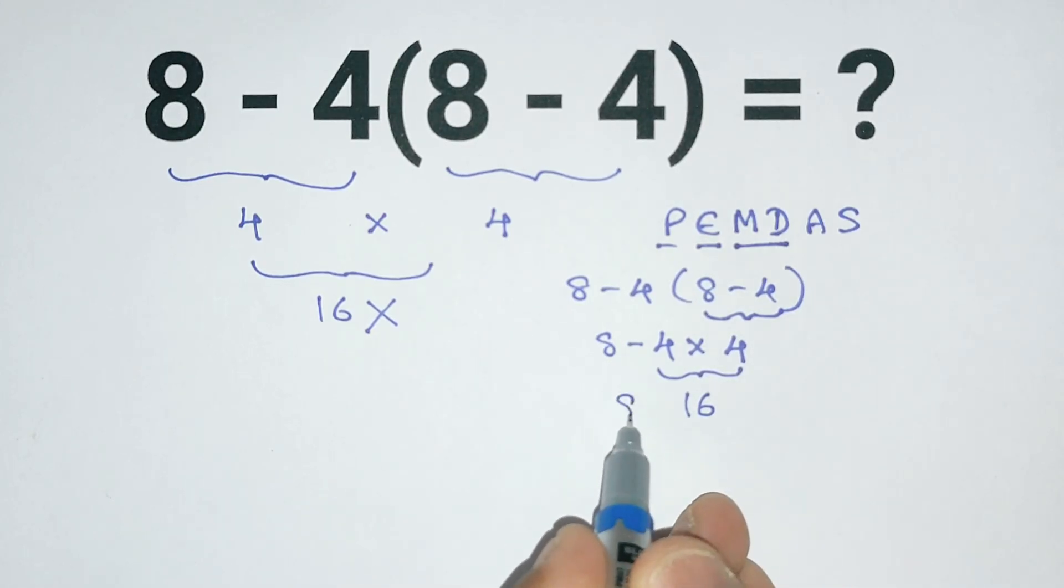Now we have 8 minus 16, which equals negative 8. So the correct answer is negative 8. Let me know if you got the right answer in the comments, and see you in the next video.